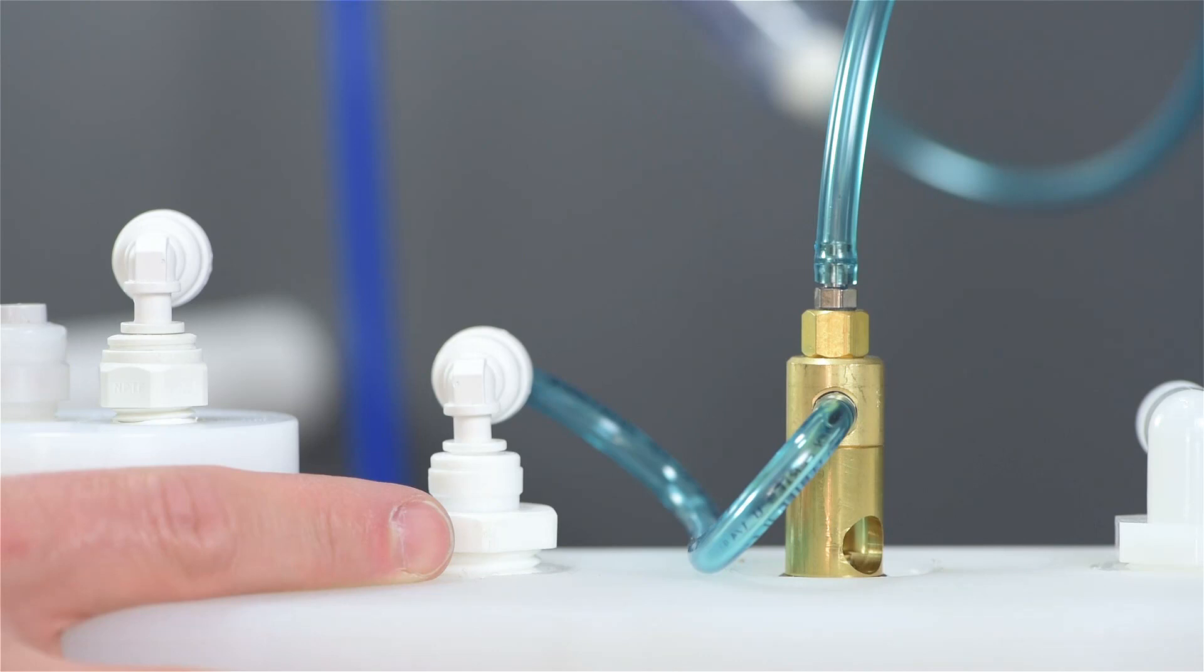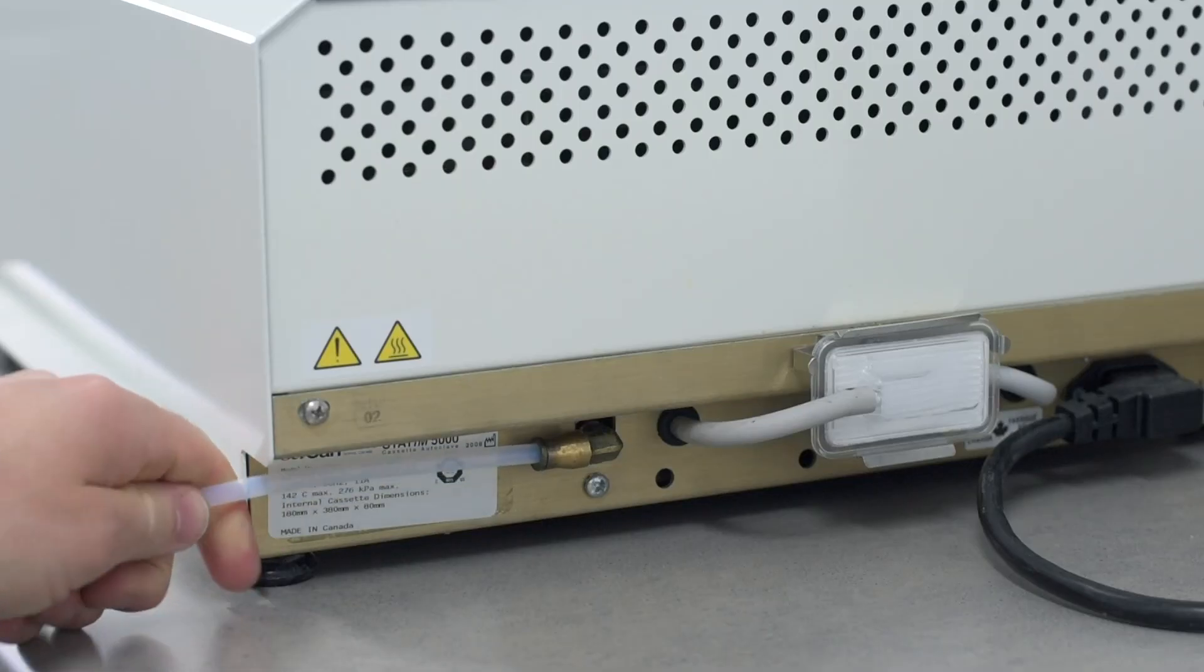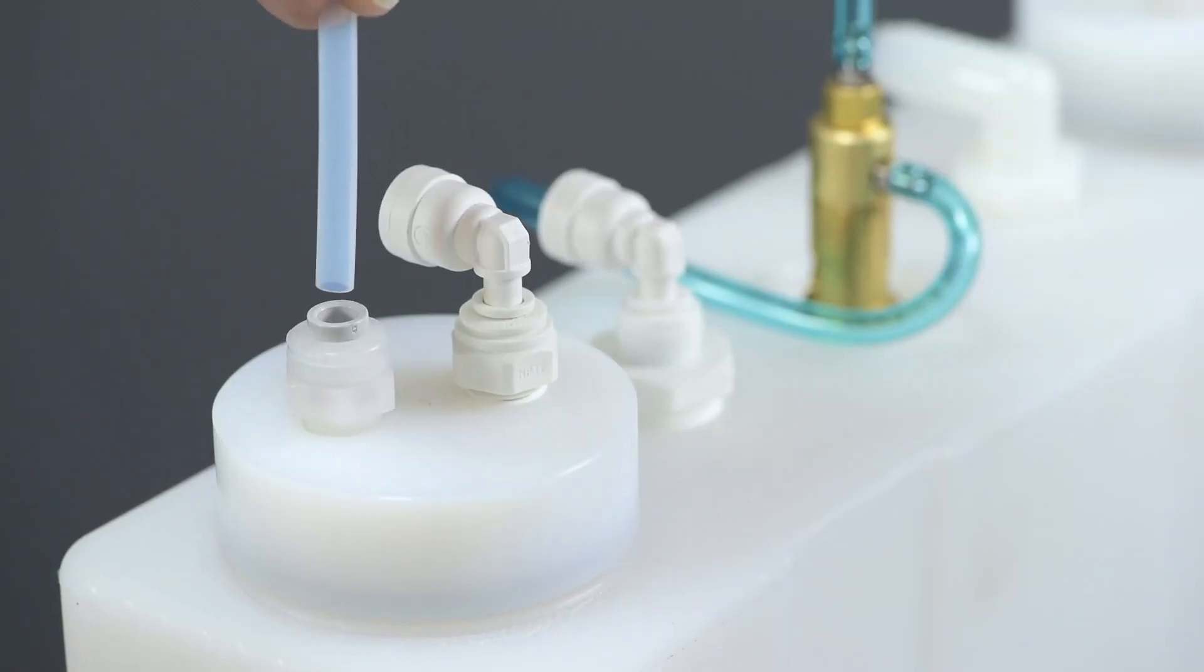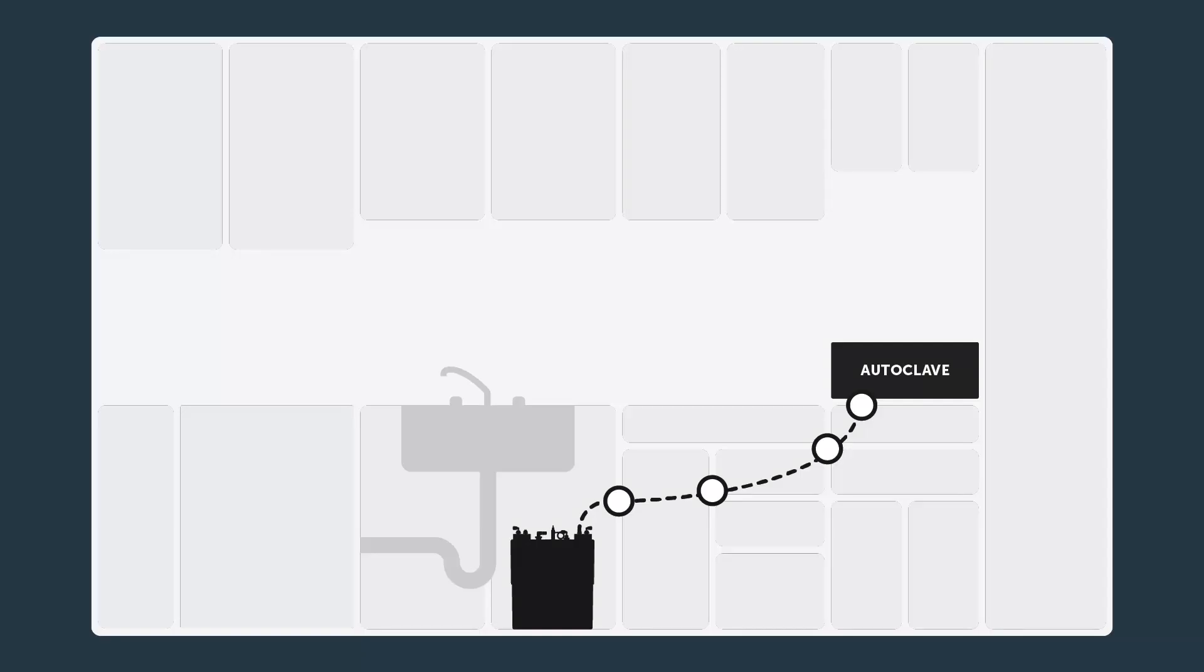Connect the 1¼ inch high temp Teflon tubing from the autoclave to the milky white Kynar fitting on top of the white manifold. Make sure the tubing doesn't kink when moving the autoclave or pulling the tubing through the cabinet partition holes.